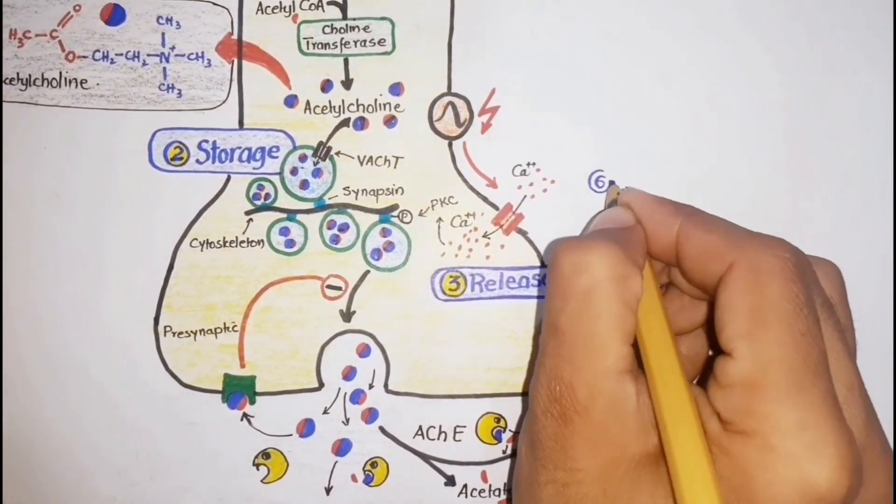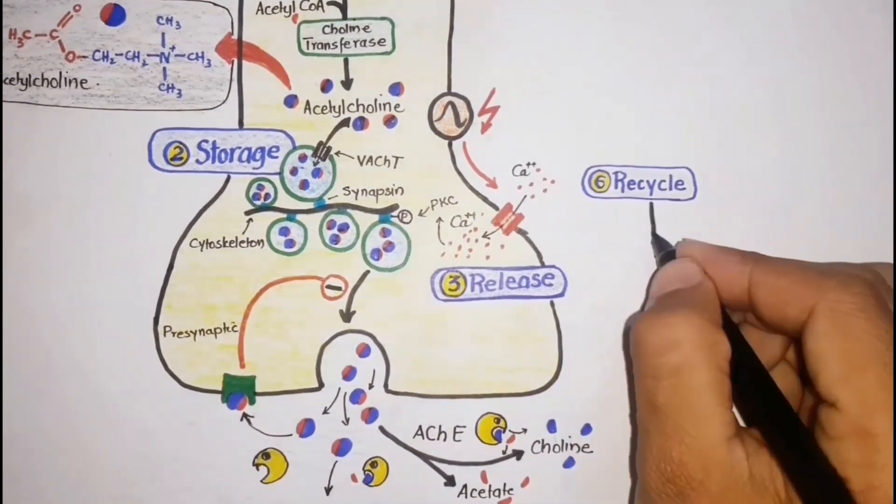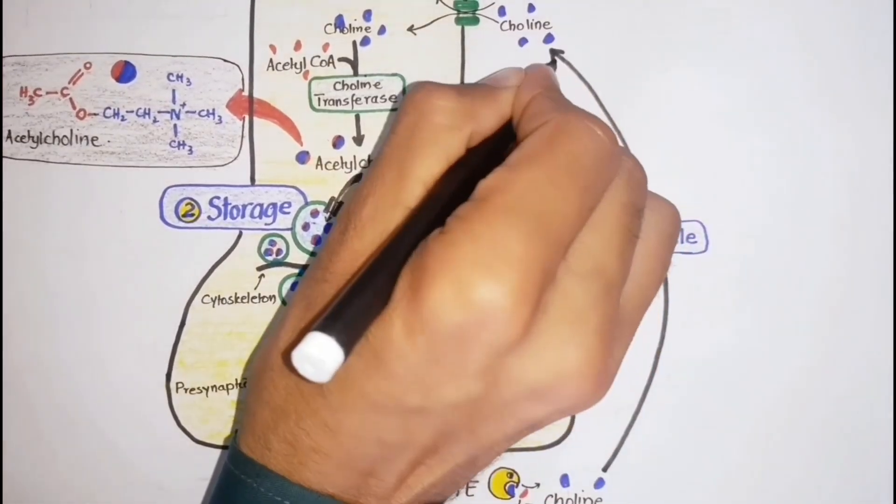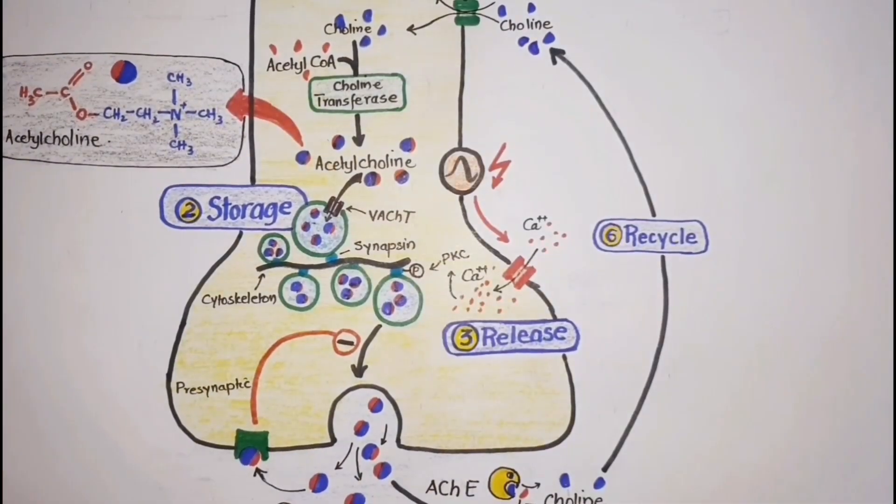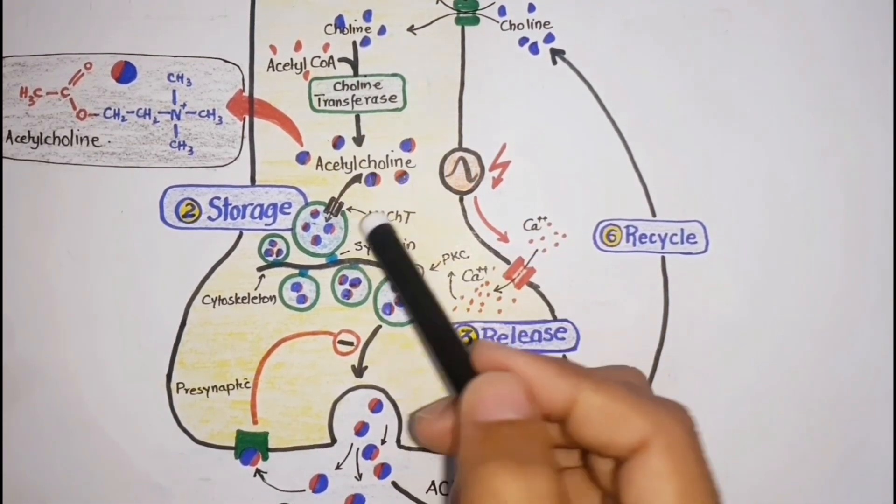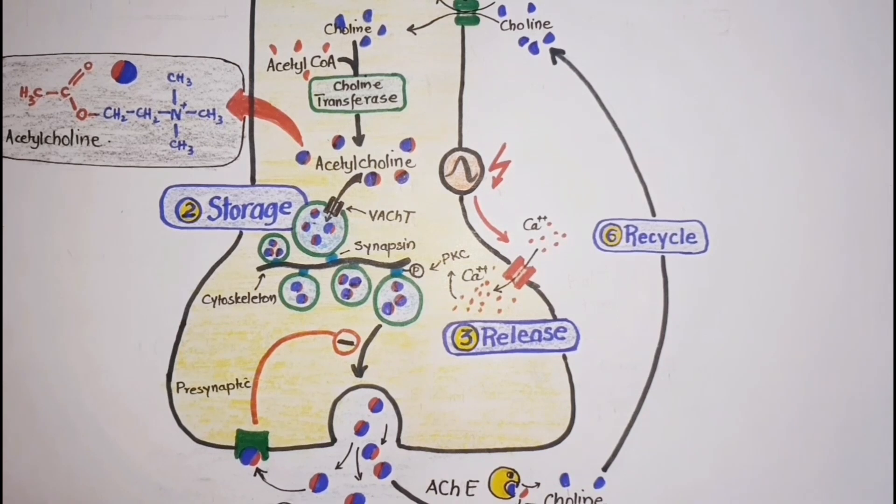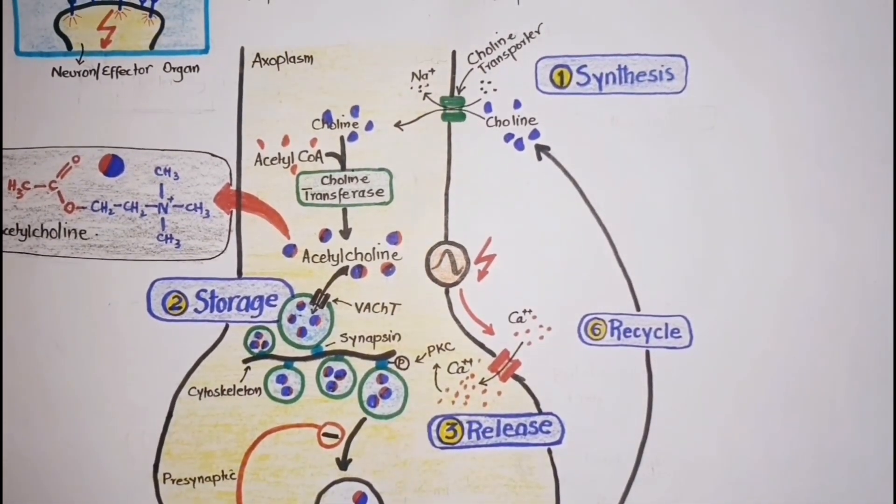The last step is the recycling of choline. Choline may be recaptured by a high-affinity transport system into the neuron where it is acetylated and stored until released by a subsequent action potential.